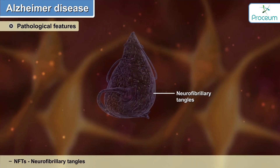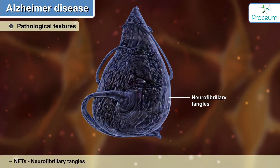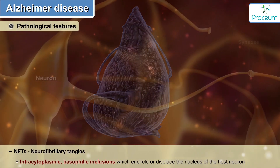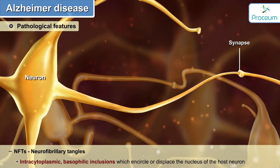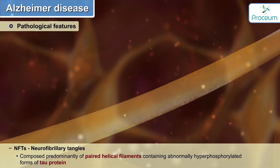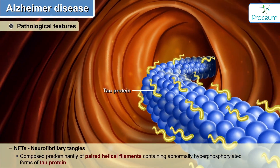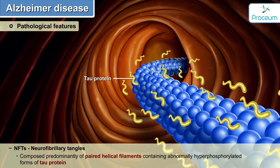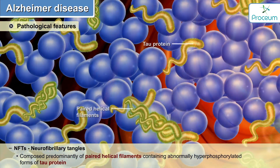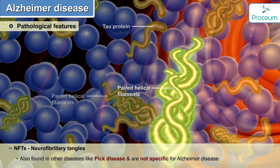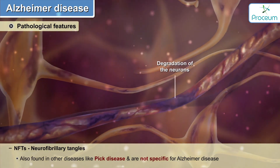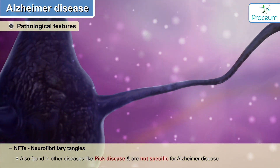Neurofibrillary tangles are intracytoplasmic basophilic inclusions which encircle or displace the nucleus of the host neuron. They are composed predominantly of paired helical filaments containing abnormally hyperphosphorylated forms of the tau protein. Neurofibrillary tangles are also found in other diseases like Pick's disease, otherwise known as frontotemporal dementia.